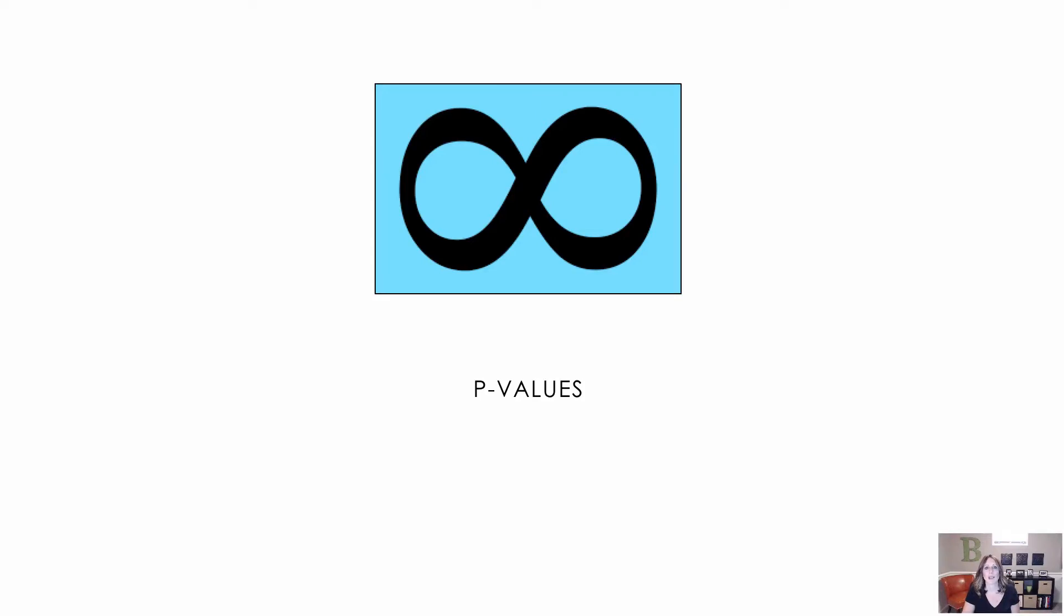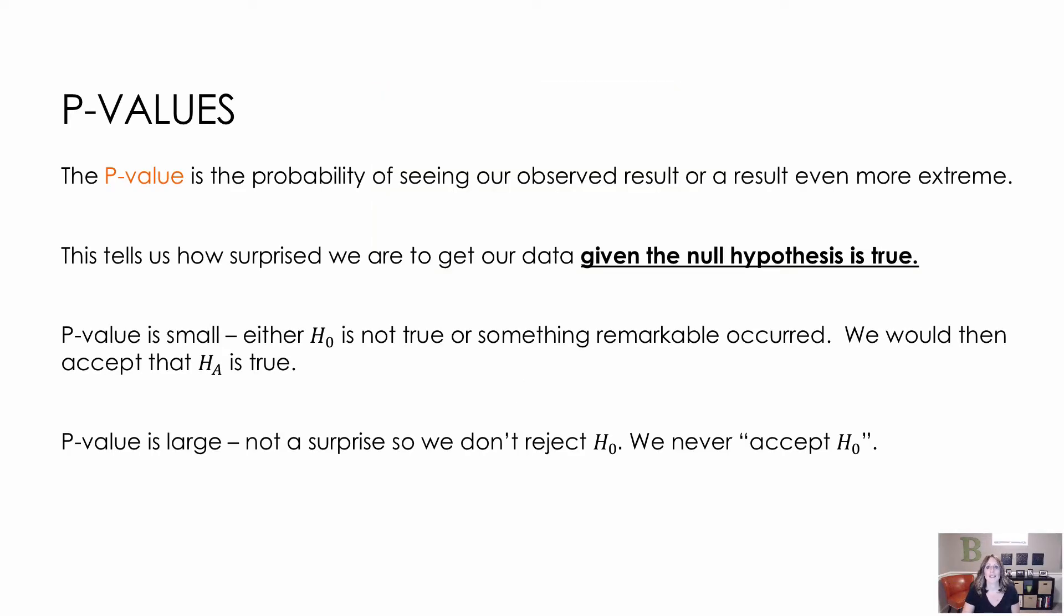So let's talk a little bit more about p-values. Remember that a p-value is the probability of seeing our observed result or a result even more extreme. So that's just the chances of us finding that based on random chance that result or more extreme. It basically tells us how surprised we are to get our data given that the null hypothesis is true.